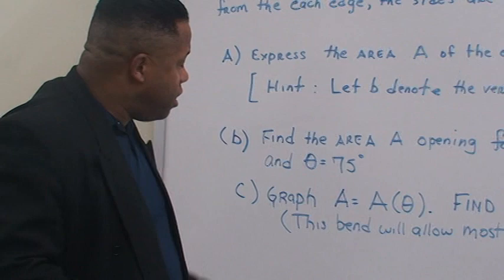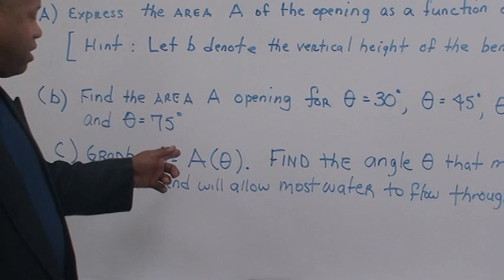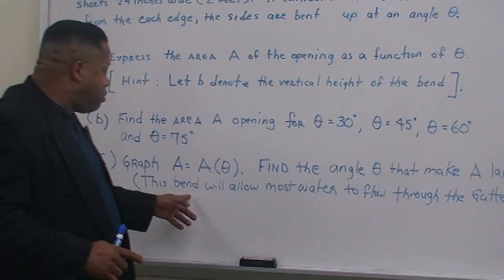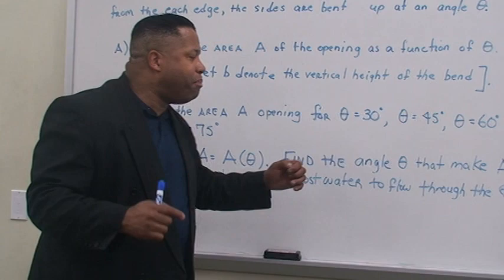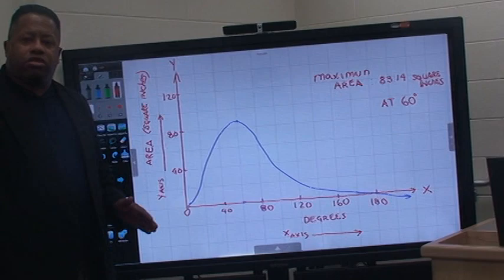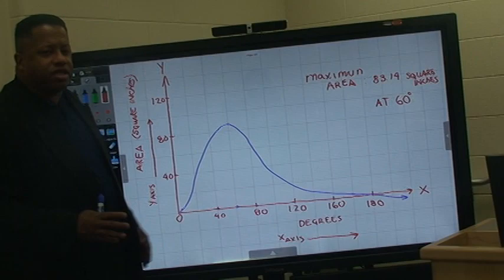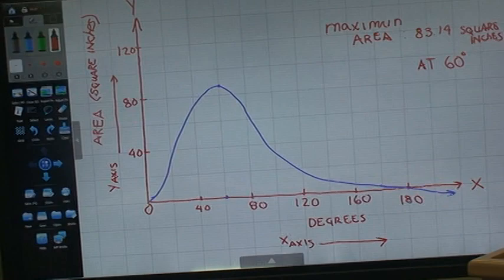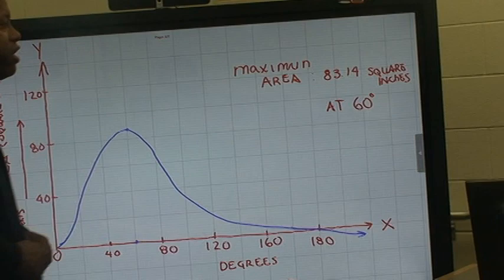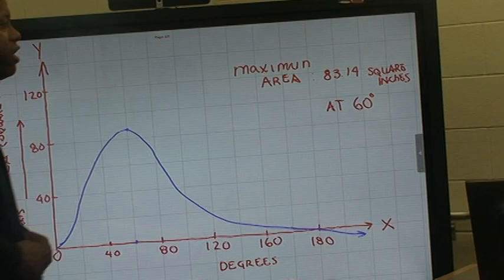And that's basically looking at the graph. Let's go back to the question. C, graphing A at A sub theta, we want to find the angle theta that makes A the largest, that makes the area. A is the area. And this bend, when you bend it, some angle theta, this will allow most of the water to flow through the gutters safely and save your house or your building. Looking at this, we see when we plug the areas into the formula over there, this is what we get on the graph. So when you take your trusty TI, 83, 84, your graphing calculator, and you plug the equation in, and plug in for theta, 60 degrees, look what you get. You have a maximum of 83.14 square inches at 60 degrees. And this is what this looks like.